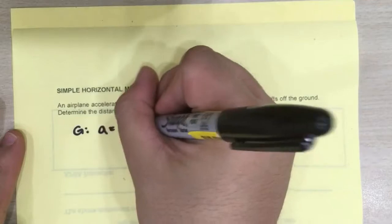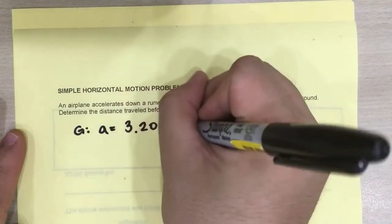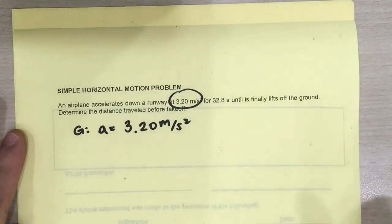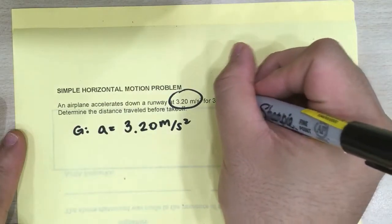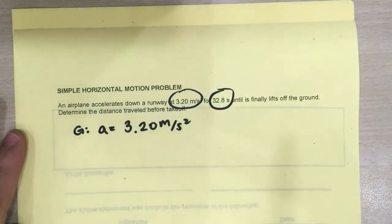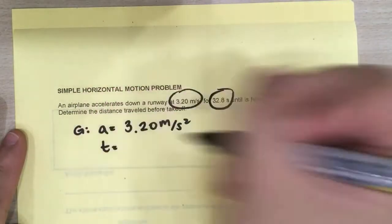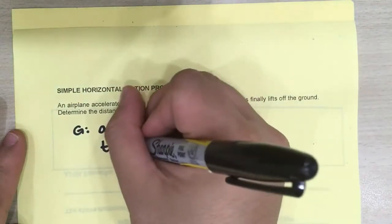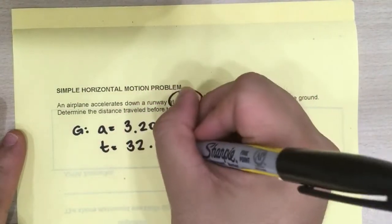Okay, so we'll write that down. We're given the acceleration. And 32.8 seconds. Now seconds is a unit for time. Therefore, we are also given the time, 32.8 seconds.